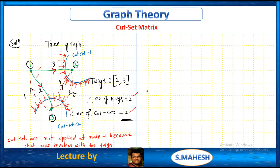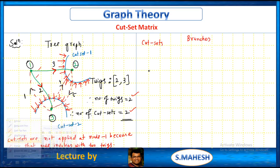From this, we have to get the cut set matrix. Cut sets versus branches — how many cut sets? 1 and 2, so two rows. How many branches? 5 branches: 1, 2, 3, 4, 5. If you know the concept of tie set matrix, this concept is very easy. There, we chose the link direction; here, we choose the twig direction.